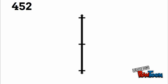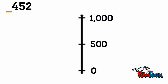What about four hundred fifty-two rounded to the nearest thousand? We look at the thousands place — there's actually nothing there. So our lower estimate is going to be zero, our upper estimate will be one thousand, and right in the middle will be five hundred.